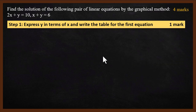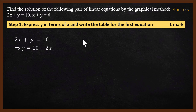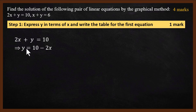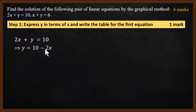The first step: express y in terms of x and write the table for the first equation. The first equation is 2x plus y equals 10. We have to convert this equation into y equals something. You move 2x to the right-hand side — the sign changes from plus 2x to minus 2x — so y equals 10 minus 2x.